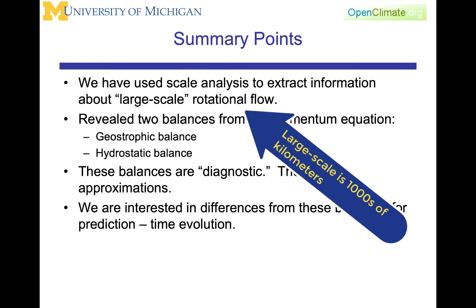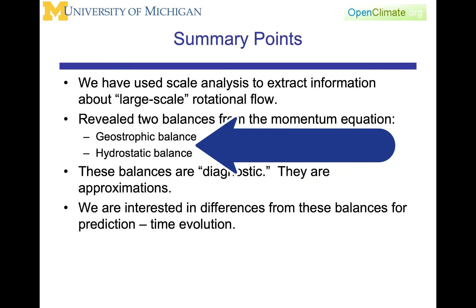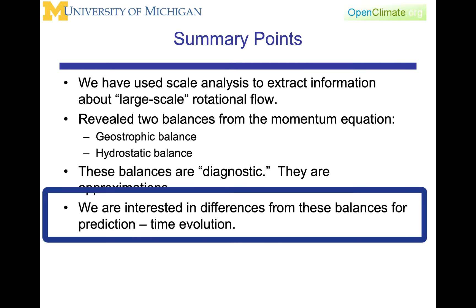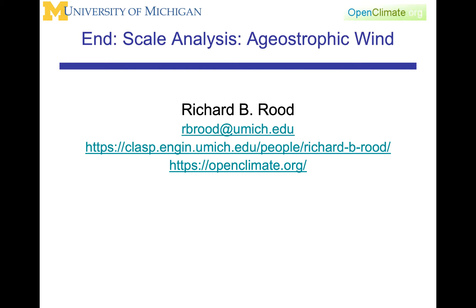In summary, we've used scale analysis to extract information about large-scale rotational flows, where the Rossby number is small and Earth's rotation is important. We've revealed two balances from the momentum equation — geostrophic and hydrostatic — which are very good diagnostic approximations. But ultimately we are interested in the differences from these balances to understand the time evolution of the flow. You should also look at the lectures on the scale analysis of the continuity equation and the thermodynamic equation for a full picture.